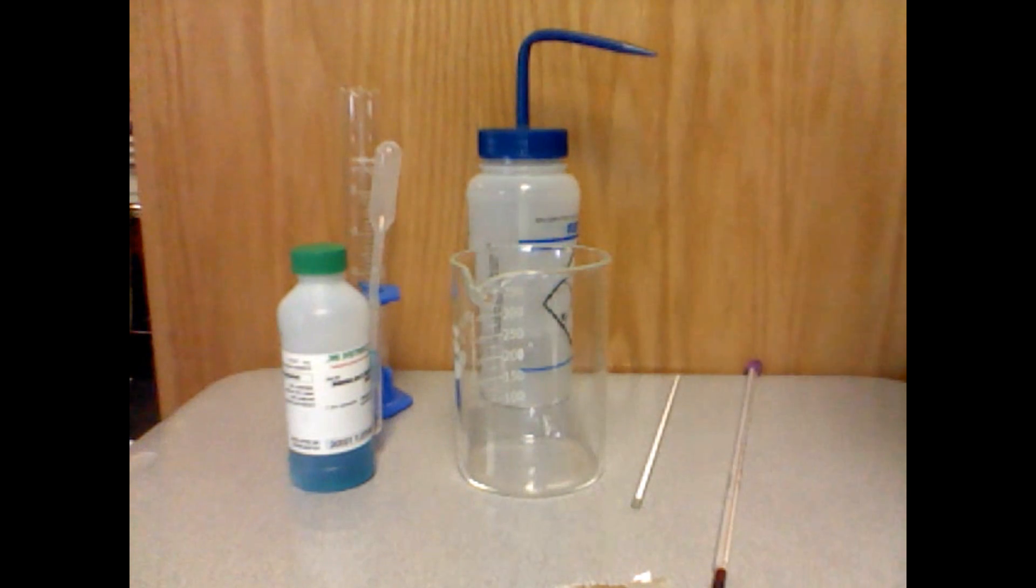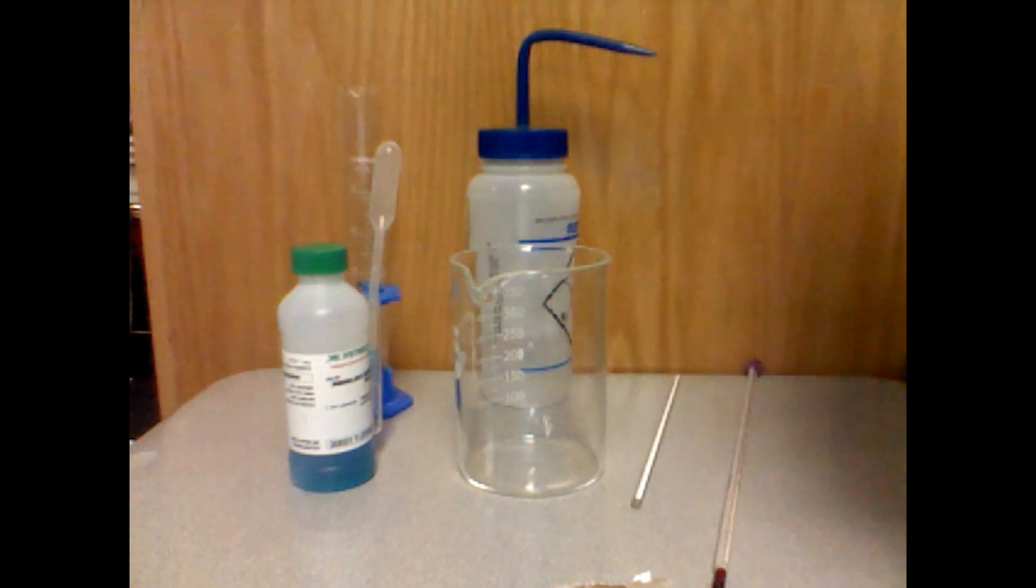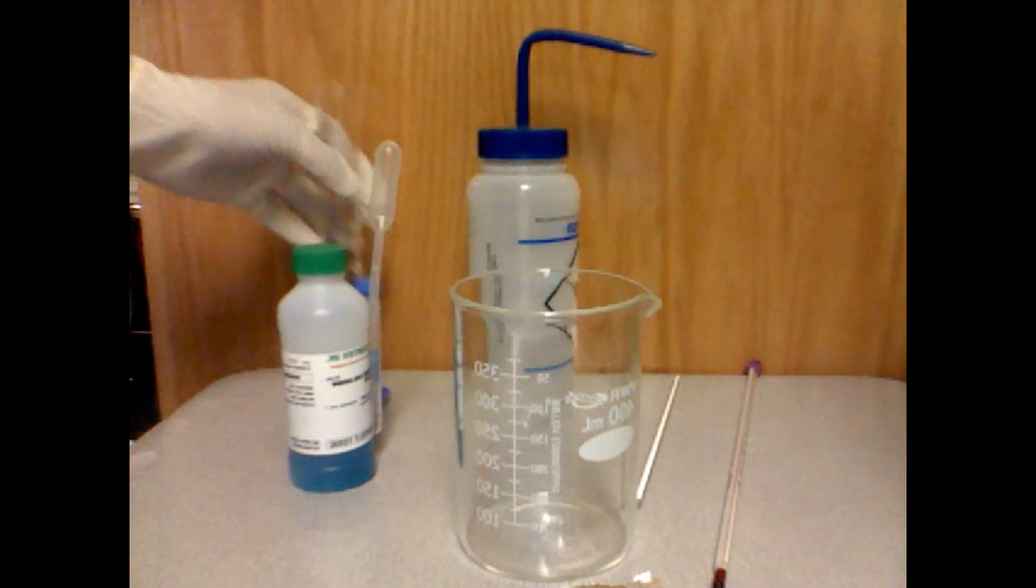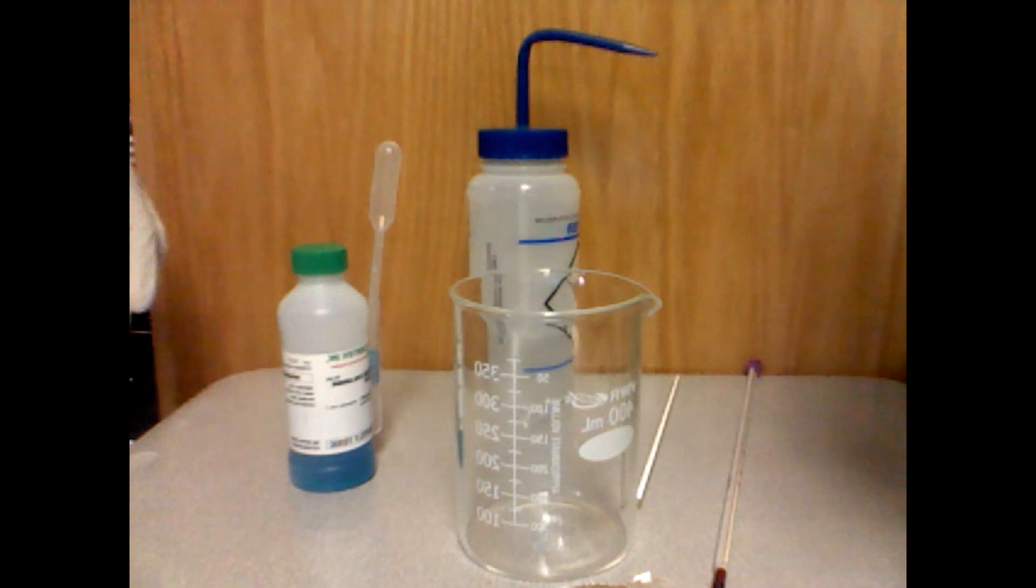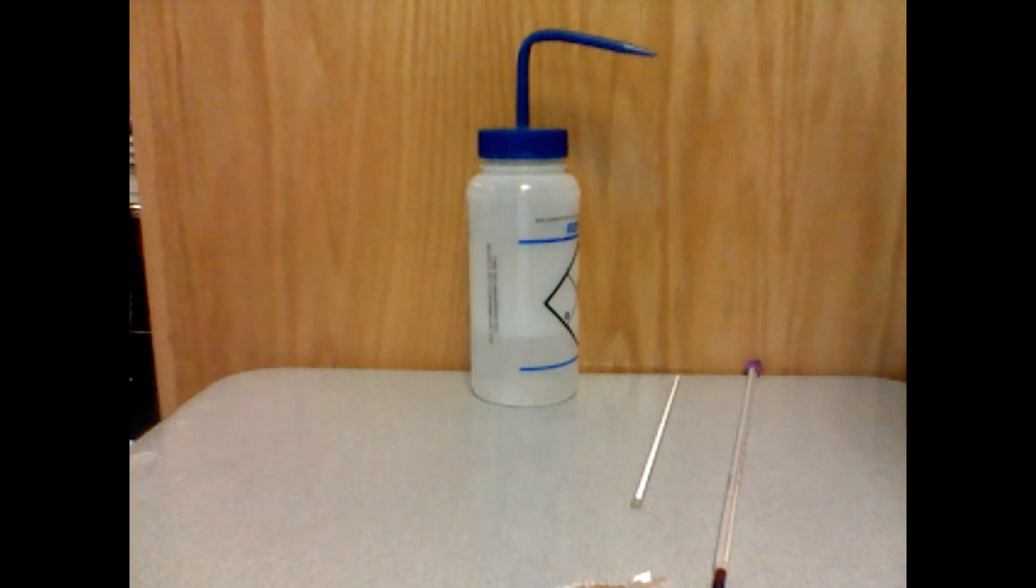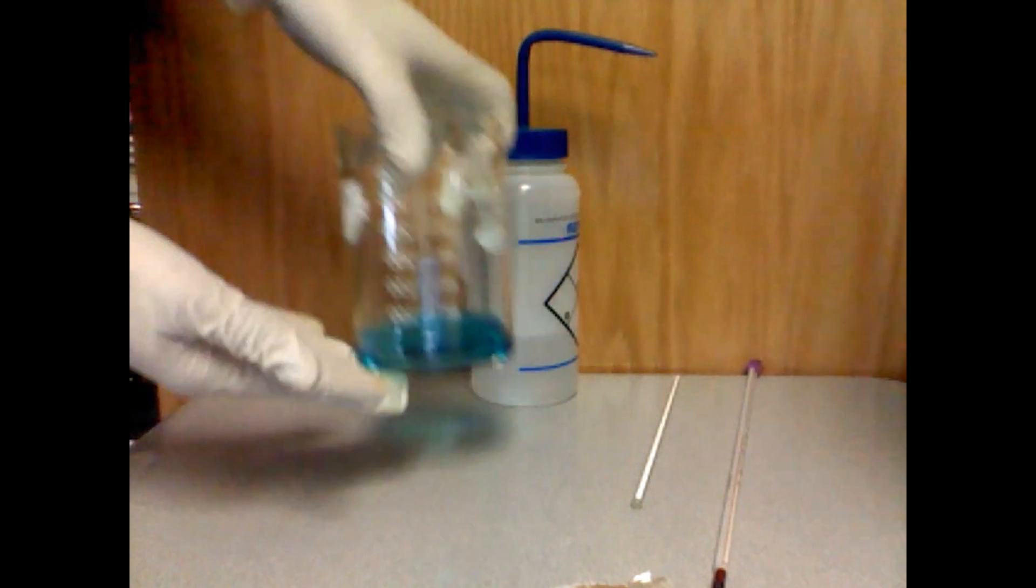Now, to begin this experiment, we must use a 400 milliliter beaker to put our solution in. After we have measured 35 milliliters of the copper(II) chloride solution, we will pour it into the 400 milliliter beaker.